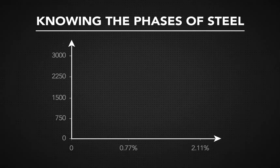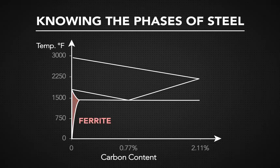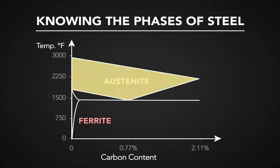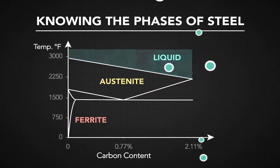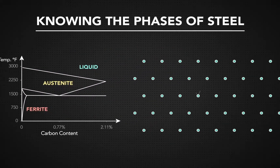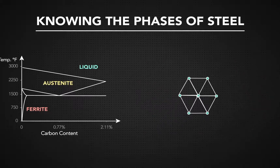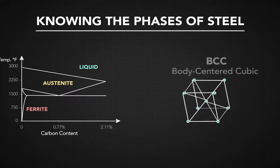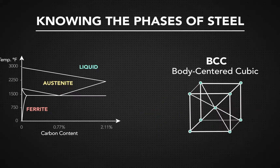When metal begins to fluctuate in temperature, it passes through certain phases. These phases are defined by specific crystal structure formations. At room temperature, the steel has a body-centered cubic, BCC, crystal structure. This is the ferrite phase.